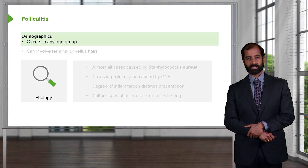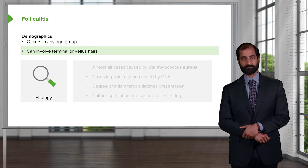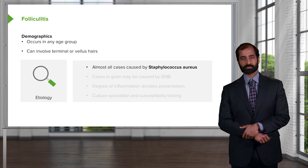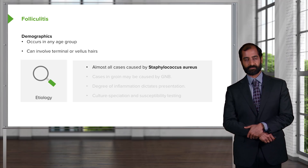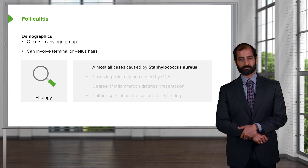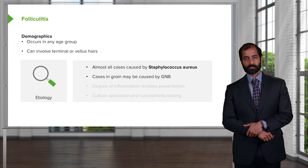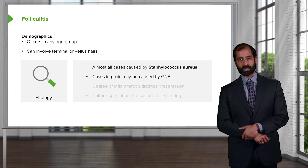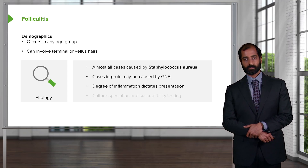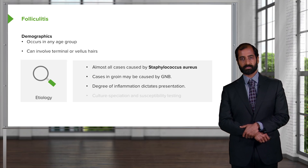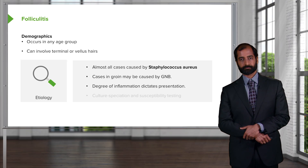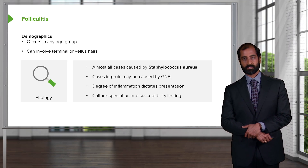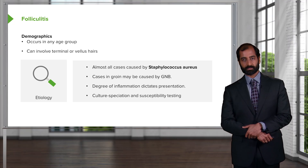The demographics — folliculitis can occur at any age group and can involve terminal and vellus hairs. Almost all cases are caused by Staph aureus — that's where your focus should be. Cases in the groin may be caused by gram-negative bacteria. The degree of inflammation dictates the presentation, and a culture must be done to identify the particular organism.